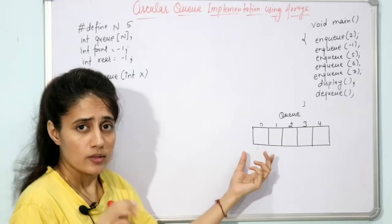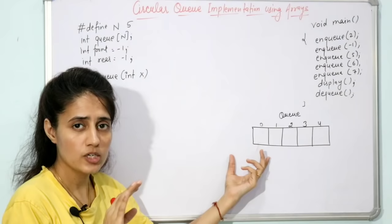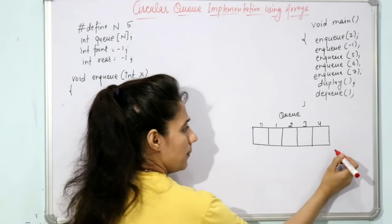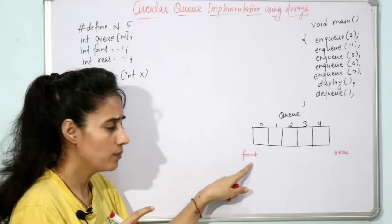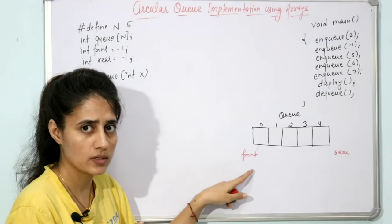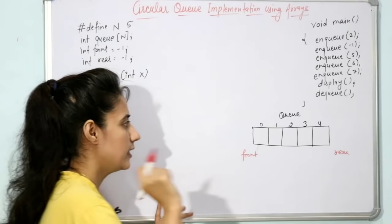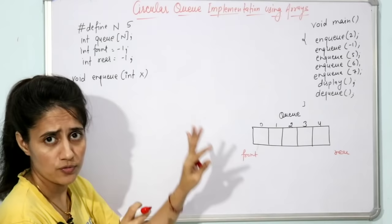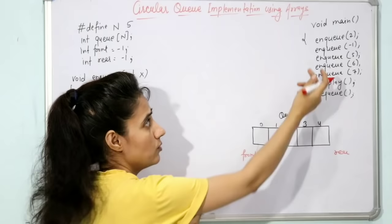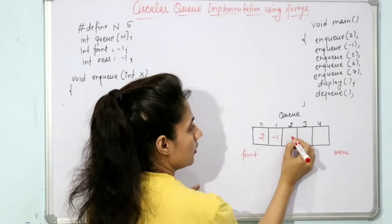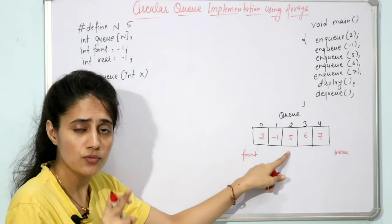Now what is that drawback? A queue follows the FIFO rule — first in, first out. Insertion is from the rear end and deletion is from the front, both with O(1) time complexity. Let's take an example. This queue has size 5. Suppose we call enqueue 5 times, inserting 2, -1, 5, 6, and 7. How we store data here has been discussed in detail in the previous video on queue implementation using arrays.